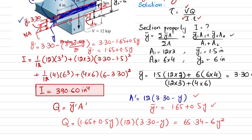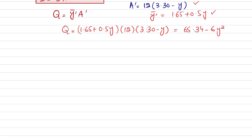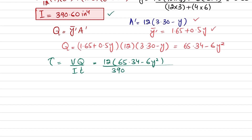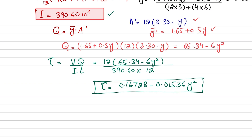Now we have all values including Q, so we substitute into the shear stress formula: tau equals V times Q divided by I times t. V equals 12 kips, Q equals 65.34 minus 6Y², I equals 390.60 in⁴, and t equals 12 inches. Calculating gives the shear stress as tau equals 0.16728 minus 0.01536Y², which is the shear stress resisted by the flange.